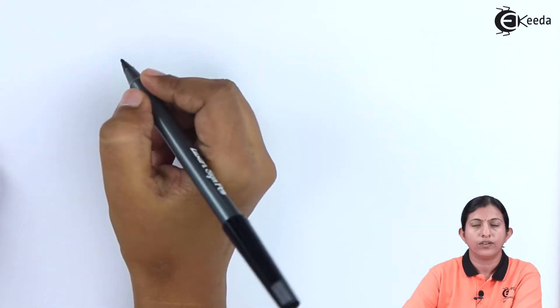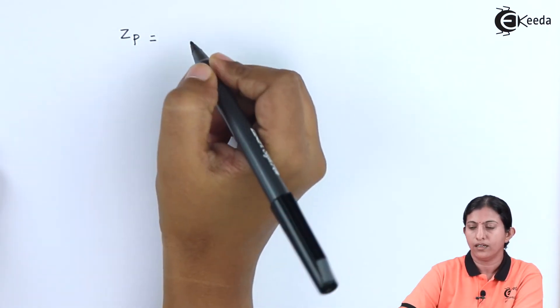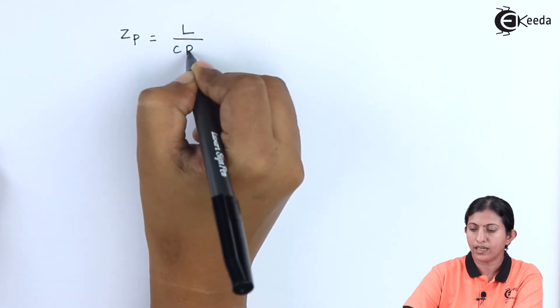Next we will calculate the value of Zp. Zp = L/(CR).